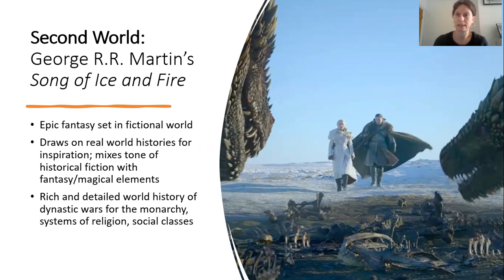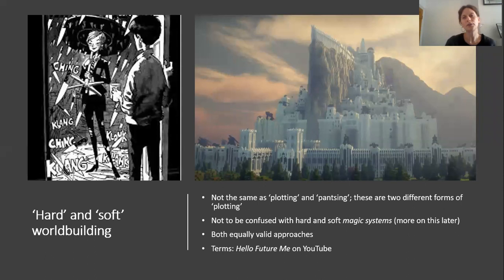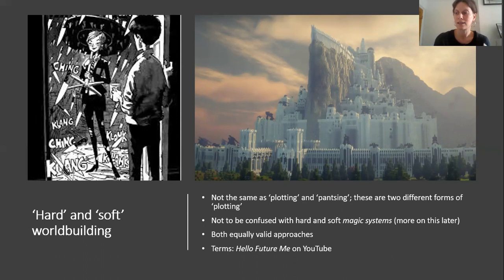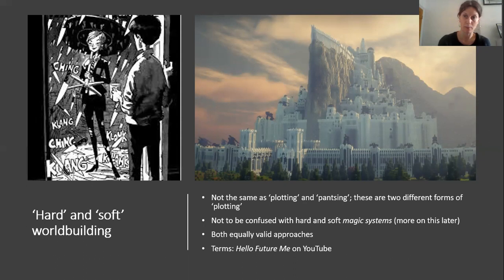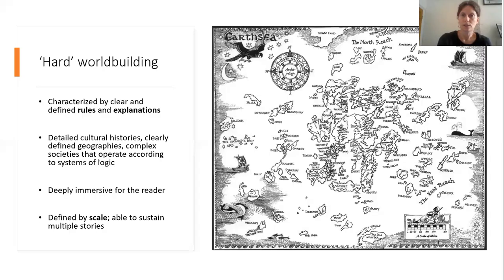This brings us to a third set of approaches to world building: hard and soft world building. These terms are not the same as plotting and pantsing that we've already discussed — these are actually terms for two different approaches to plotting. They should also be distinguished from hard and soft magic systems, which I'll talk about a little bit later on. These two terms derive from a writing and world building YouTube channel called Hello Future Me, run by somebody called Tim Hickson, which you should definitely check out if you're interested in world building. They describe two very different but equally valid approaches.